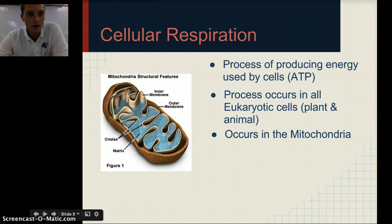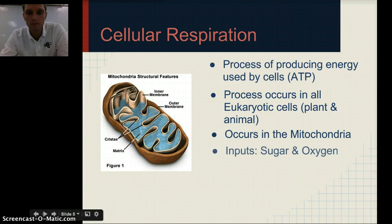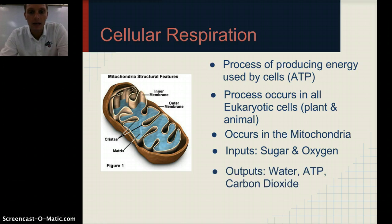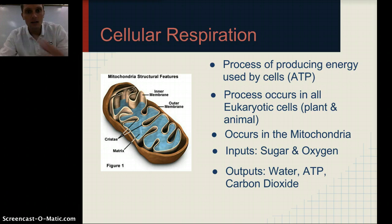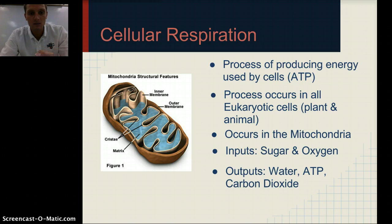Here's a nice image of a mitochondria. The inputs for cellular respiration include sugar and oxygen, and the outputs include water, ATP, and carbon dioxide. You'll notice that it's almost just totally flip-flopped or the opposite of photosynthesis — so if you memorize one, the other is nearly the complete reverse. These products and molecules are really just being recycled between plants and organisms that are taking in that oxygen to produce ATP.